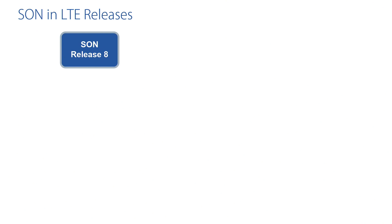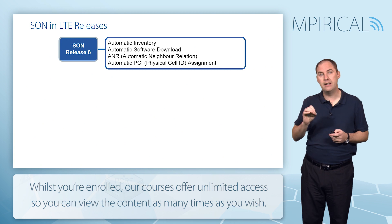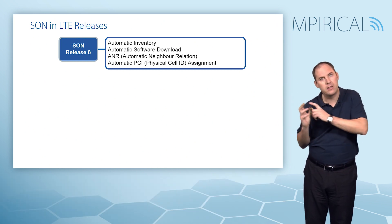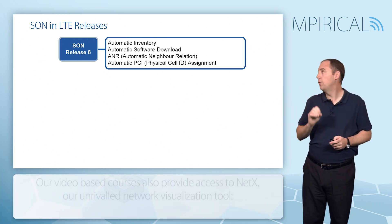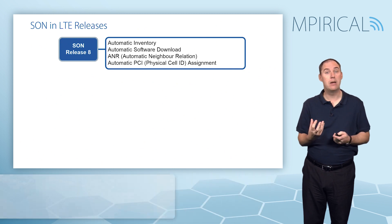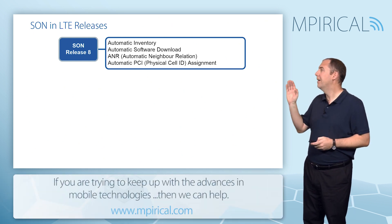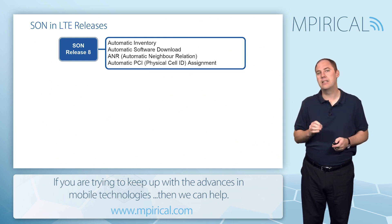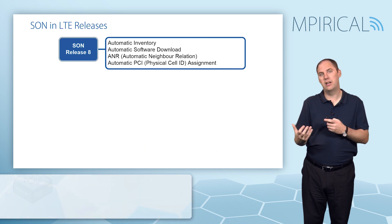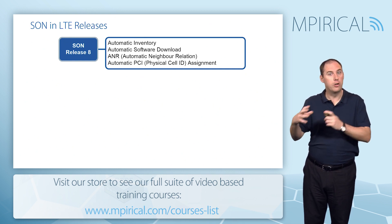SON has been introduced in stages aligned to 3GPP releases, starting with Release 8. Key Release 8 features include: automatic inventory, where eNodeBs inform the system what is on that cell; automatic software download and configuration file download to eNodeBs; ANR (Automatic Neighbor Relation), which discovers neighboring cells and enables establishment of the X2 interface for handoff; and automatic PCI (Physical Cell ID) assignment, which optimizes PCI values to minimize interference between adjacent cells.